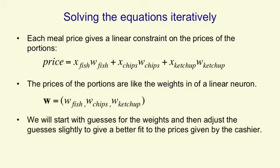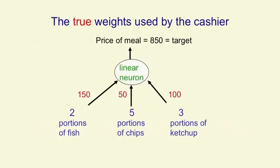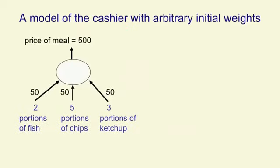We're going to start with guesses for these prices, and then we're going to adjust the guesses slightly so that we agree better with what the cashier says. Let's suppose that the true weights that the cashier is using to figure out the price are 150 for a portion of fish, 50 for a portion of chips, and 100 for a portion of ketchup. For the meal shown here, that will lead to a price of 850, so that's going to be our target value.